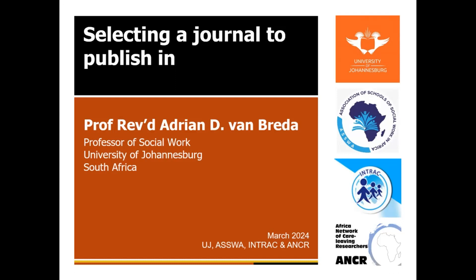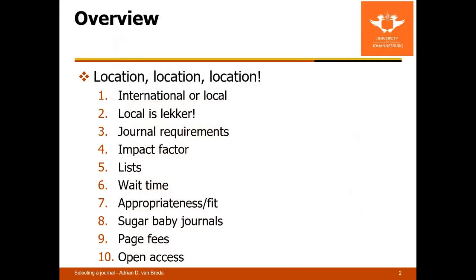Let's start. What we're going to do today is cover 10 topics. We'll move fairly briskly through them — some will take a bit longer, some of the last ones are a bit quicker. We're going to talk about international versus local journals and the pros and cons of each; about 'local is lekker' and the value of publishing locally; about journal requirements and how to meet them; about impact factors and various journal metrics; and about lists of journals — particularly for South Africans, the kinds of lists the Department of Higher Education and Training looks for. For those internationally, you'll need to consider what your own institution requires.